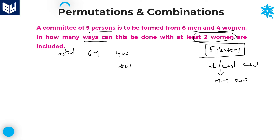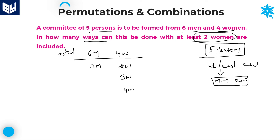The possible cases are: two men and three women; three men and two women; four men and one woman — wait, let me restate. Since minimum two men and the committee has five members, the cases are: three men and two women, two men and three women, and also four women with one man — meaning one man and four women is also possible.